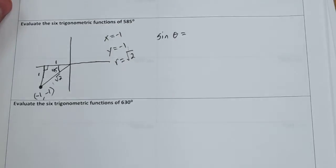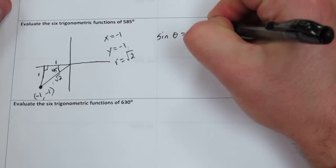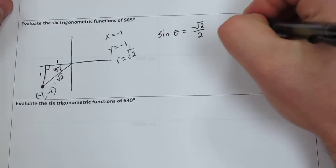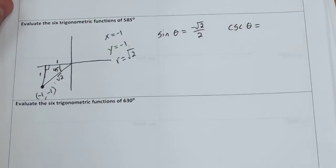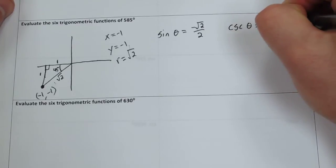When we rationalize, it will be negative rad 2 over 2. Cosecant will be r over y, so that's rad 2 over negative 1, or negative rad 2.